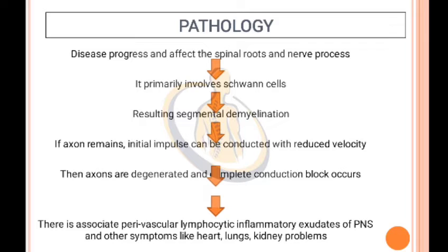Pathology — chronological order: The disease begins by affecting the spinal roots and nerve processes. It primarily involves Schwann cells, resulting in segmental demyelination. If the axon remains intact, impulses can still be conducted but with reduced velocity. Subsequently, axons degenerate and complete conduction block occurs. There is associated perivascular lymphocytic inflammatory exudate of the peripheral nervous system, along with symptoms involving heart, lungs, and kidneys.